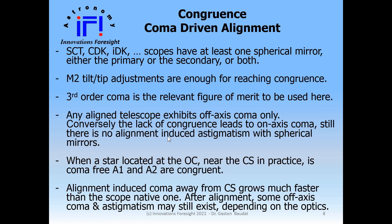Third-order coma is the right figure of merit in this context because any misaligned telescope exhibits on-axis coma, and conversely the lack of congruence leads to on-axis coma. There is no alignment-induced astigmatism with spherical mirrors. When a star located near the chip center is coma-free, both axes A1 and A2 are congruent. Alignment-induced coma away from the center grows much faster than the telescope's native off-axis coma from its optical design.